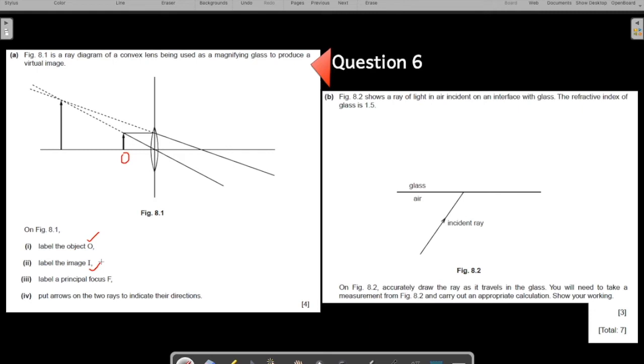The second part says label the image, this is your image. Label the principal focus, this is your focus. Why focus? As a property that a ray of light which comes parallel to the principal axis or parallel to the center line, after passing through the lens it emerges from the focus, it passes from the focus. Put arrows on the two rays to indicate their direction. Four mark question is an easy question, not so difficult if you understand all the concepts properly. Solving questions on light is never difficult. So I'm putting the arrows here, if you see.